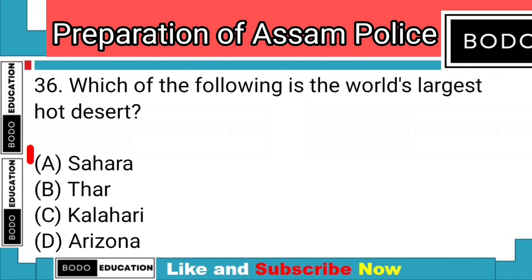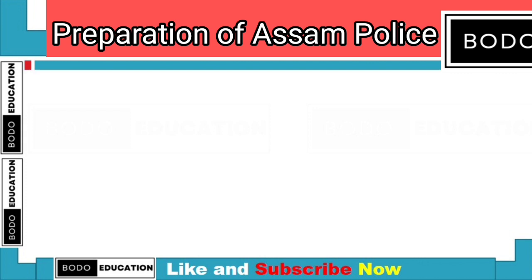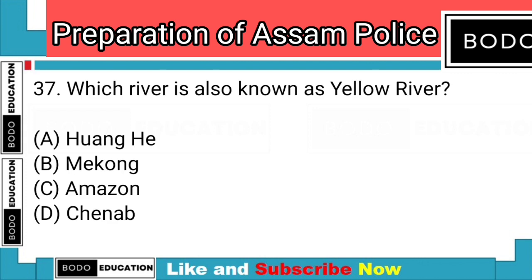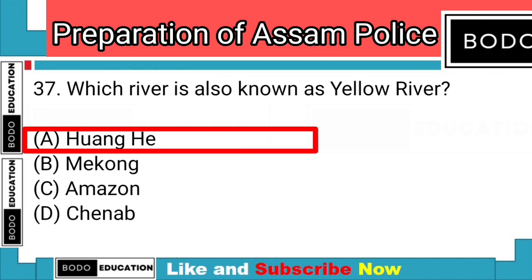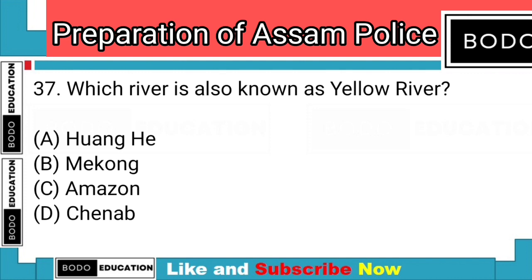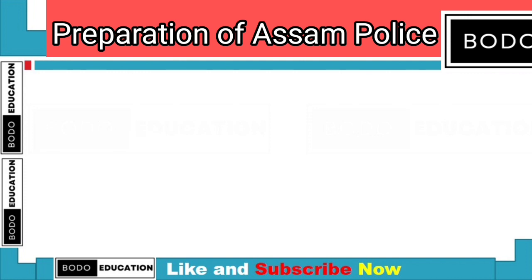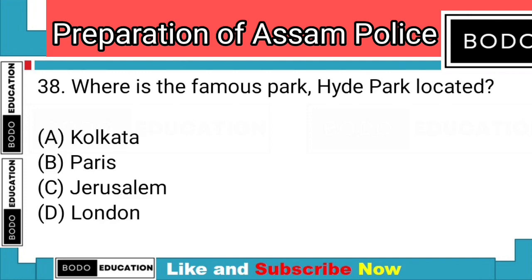Question number 36: Which of the following is the world's largest hot desert? Answer: Option A — Sahara. Question number 37: Which river is also known as the Yellow River? Answer: Option A — Huang He, which is in China.